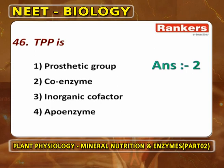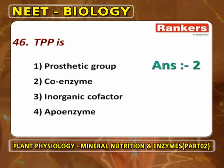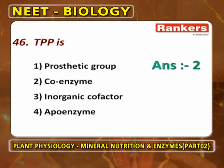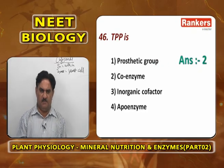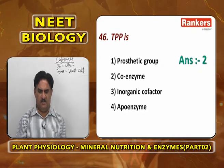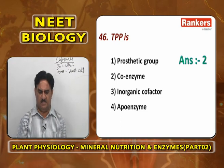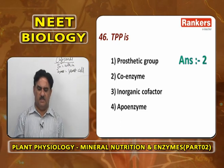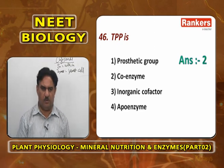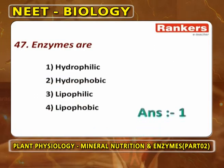TPP means thiamine pyrophosphate. It is obtained from the vitamin thiamine. It is not a prosthetic group, not an inorganic cofactor, and not the protein part of a conjugate enzyme (apoenzyme). TPP is basically a coenzyme — loosely attached to the apoenzyme.